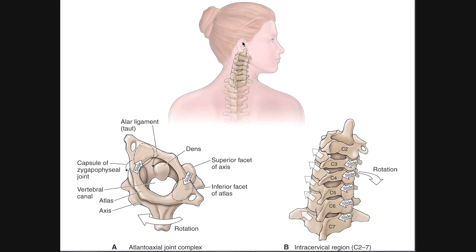Here's an interesting thing about cervical rotation. Notice when this patient rotates her head to the right, there's actually a little bit of lateral flexion of the spine to the right as well. In fact, if you try to rotate your head any direction, you cannot avoid lateral flexion in the same direction. When this person rotates their head to the right, we're going to see a similar pattern: upsloping on the left side and downsloping a little bit on the right side.